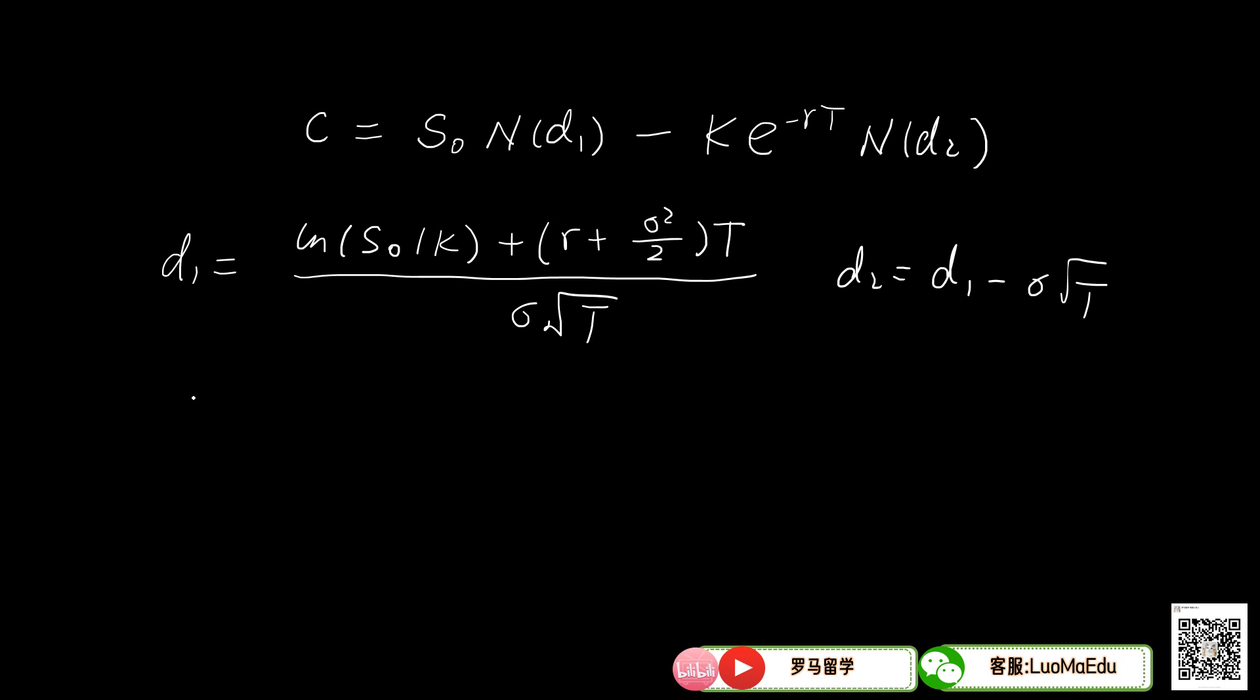We let σ go to infinity, or more accurately, positive infinity, and we let T go to positive infinity. So d1 will be at the scale of 1/2 σ√T, and d2 similarly at the scale of -1/2 σ√T. In both cases, whether σ goes to positive infinity or the maturity goes to positive infinity, d1 will go to positive infinity and d2 will go to negative infinity.